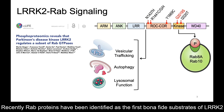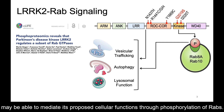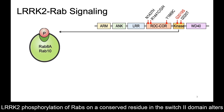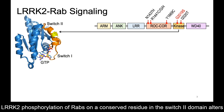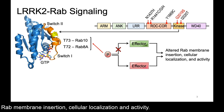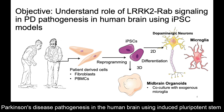Recently, RAB proteins have been identified as the first bona fide substrates of LRRK2 kinase. RAB proteins act as master regulators of cellular trafficking, and thus LRRK2 may be able to mediate its proposed cellular functions through phosphorylation of RABs. LRRK2 phosphorylation of RABs on a conserved residue in the SW2 domain alters the way in which they interact with their downstream effector proteins, thus altering RAB membrane insertion, cellular localization, and activity.